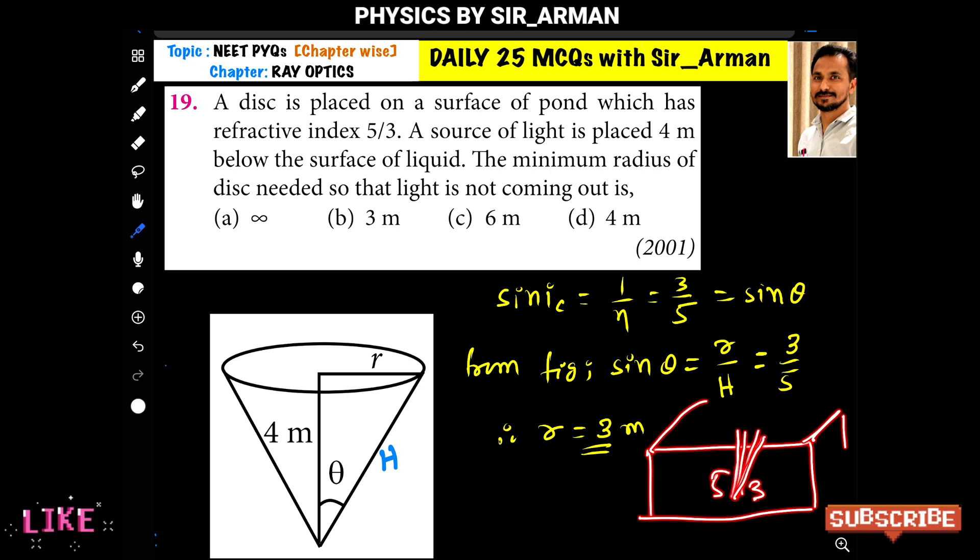But at a particular angle, because the light is passing from denser to rarer, the light will bend towards the normal. That is, from a small part, the light will come out. But from the other part, the light will not come out. So, we have to find the radius of this disk.